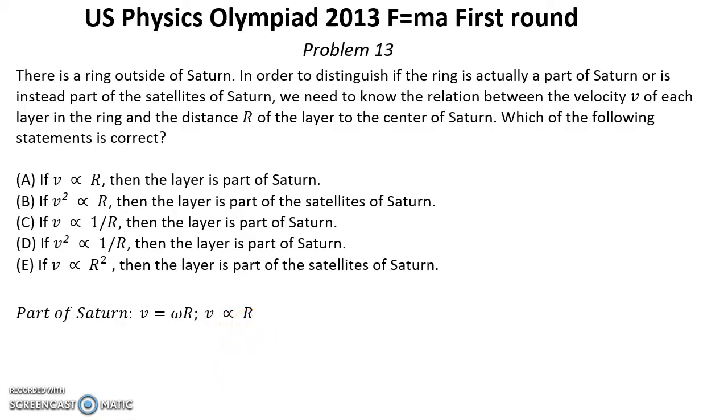In case the ring is part of a satellite system, we have centripetal acceleration which is v squared over r must equal acceleration due to gravity which is GM over radius squared. It means that v squared is inversely proportional to radius. And let's use these two dependencies for our answers.